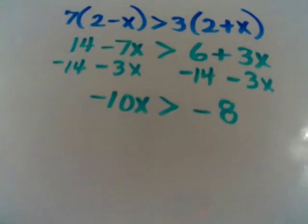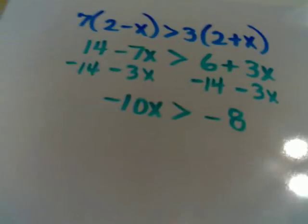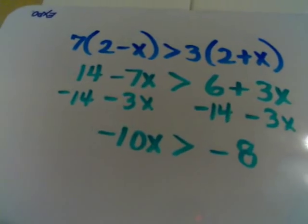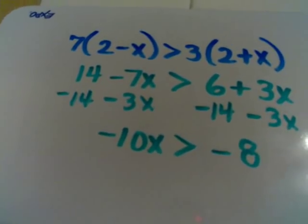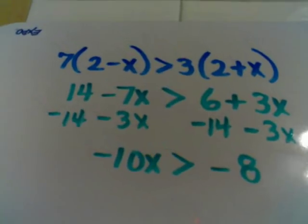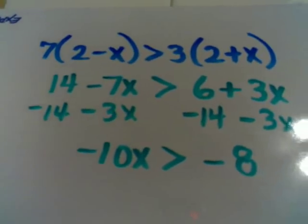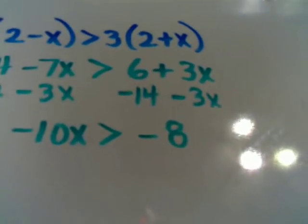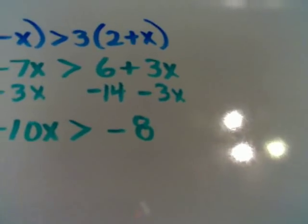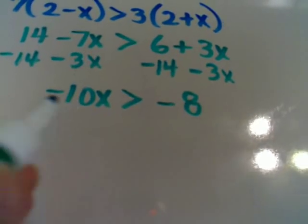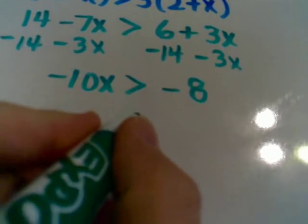All right, now what you need to ask yourself at this point is what you need to do to get x alone. In this particular problem you can see that we're going to undo multiplication by division. So both sides of this inequality are going to need to be divided by negative 10.